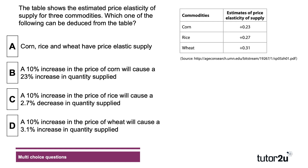Here's a quick multiple choice question to finish — a past question on this topic. The table shows the estimated price elasticity of supply for three commodities. Which one of the following can you deduce from the table? Press pause, have a go at the question, then press play when you want to go through the answer.